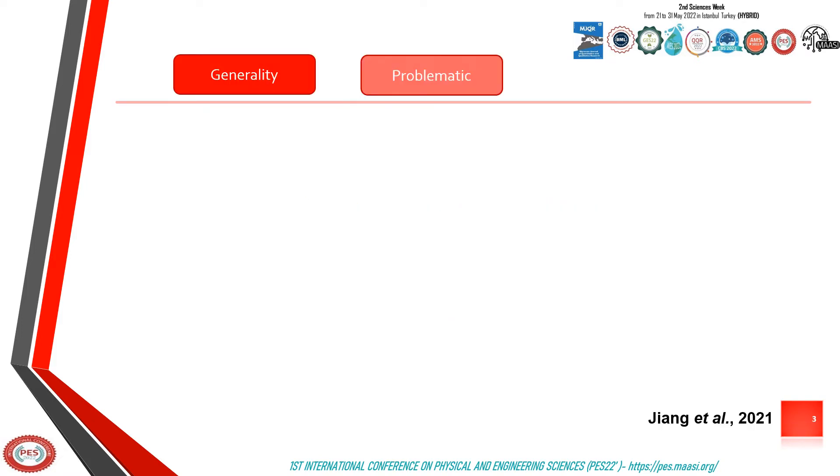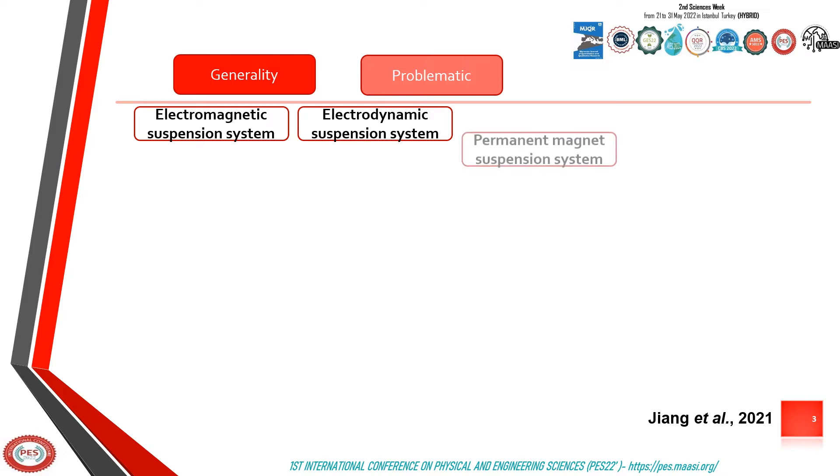Currently, there are three types of levitation systems: electromagnetic suspension system, electrodynamic suspension system, and permanent magnet suspension system.